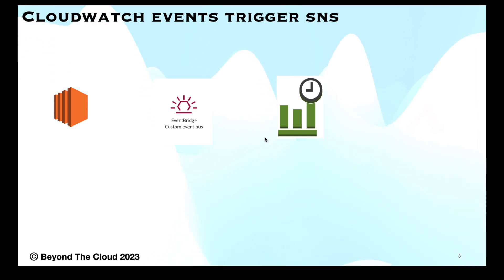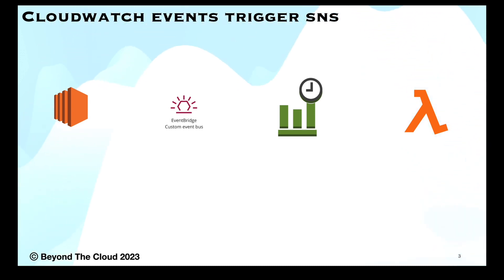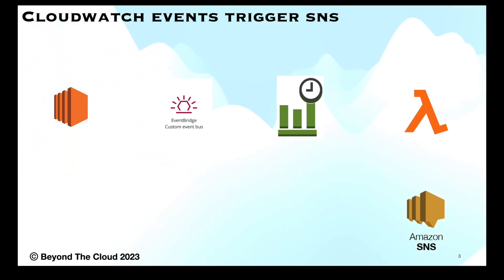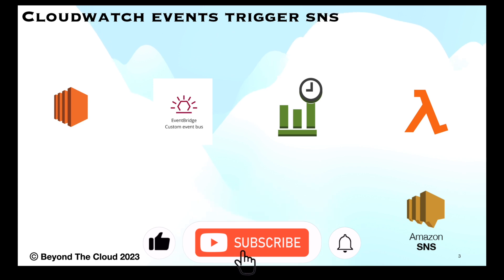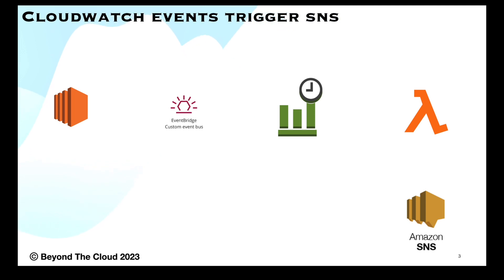After filtering events with the event rule, it will target a Lambda function. The Lambda can process the event — read why it was generated, which EC2 instance was terminated or spun up. Then that Lambda will trigger an SNS topic, and from that SNS topic we will receive an email saying this instance has been terminated or spun up. We will see the full integration from event bus to event rule to Lambda to SNS, hands-on from scratch.